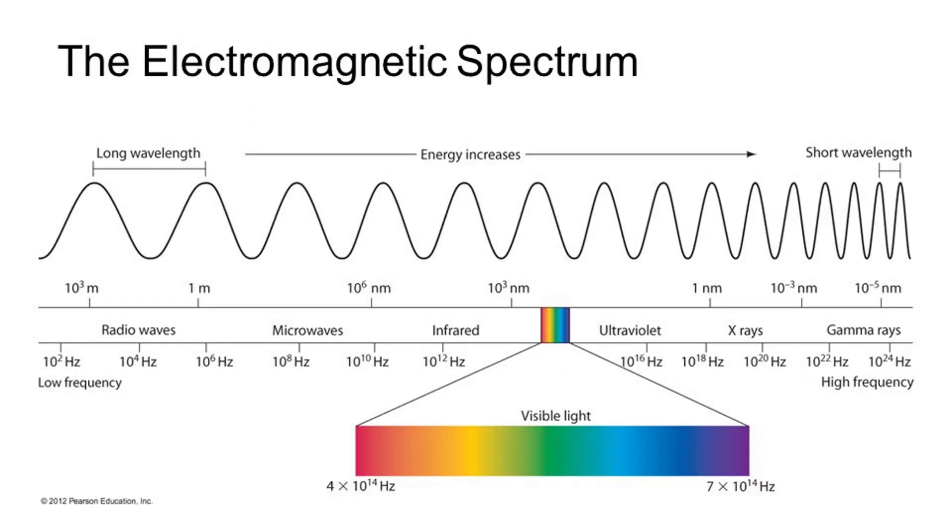Similar to sound, we have octaves in the light spectrum, with seven visible colors: red, orange, yellow, green, blue, indigo, and violet, before starting a higher level or octave of vibrations, such as infrared and ultraviolet.